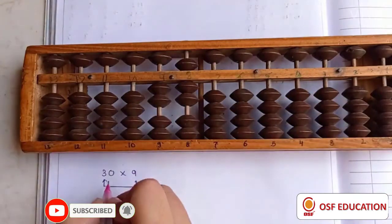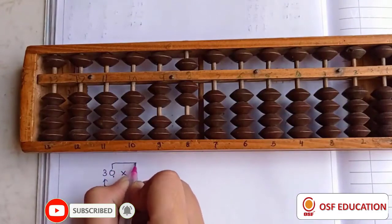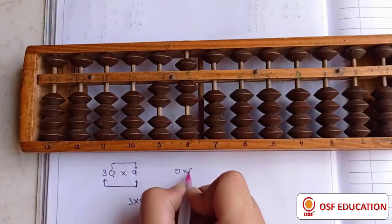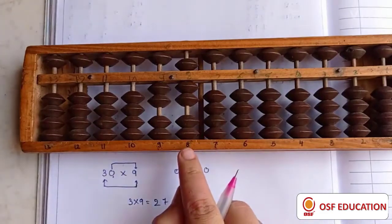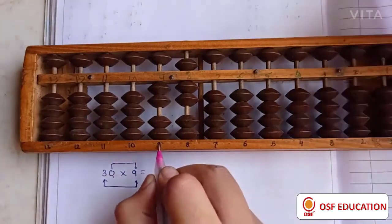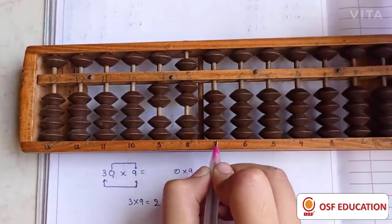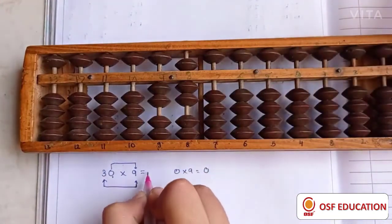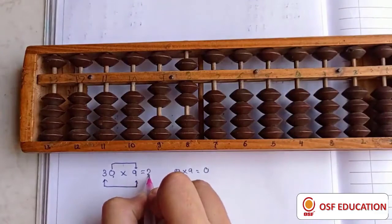Now multiplying 2 with 9 gives us 0. So we are not placing any beads here. So our final answer is 2, 7, and here there is no bead, so 0. So our answer is 270.